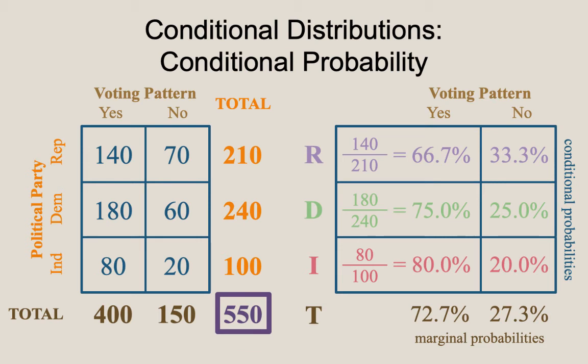One question you might have is: why did we divide by 210, 240, and 100? Couldn't we have divided all the numerators by 400? The answer is yes, it could have been done that way. If we wanted to report the conditional probabilities for voting pattern conditioned on voting habits instead of by political party, we would divide by the column totals. In our example, we conditioned on political party, focusing on one row at a time. If we had conditioned on voting pattern, we would focus on one column at a time, exploring the probability of being in one party versus another depending on whether you voted or not.